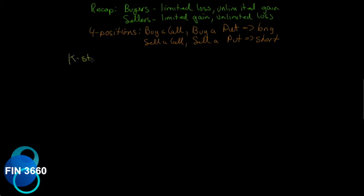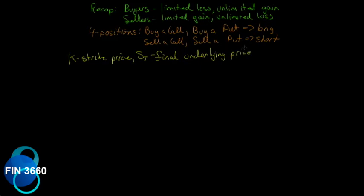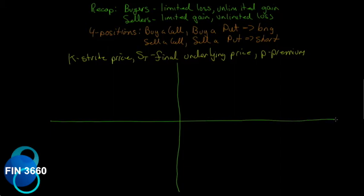Let's recall some terminology before we introduce some math. K is the strike price; S_t is the final underlying price — not just stock price, since the underlying could be a stock, index, future, currency, etc. P is the premium paid. Note that later P might be confused with the Greek letter rho, which looks like a small letter p, but for now P stands for premium.